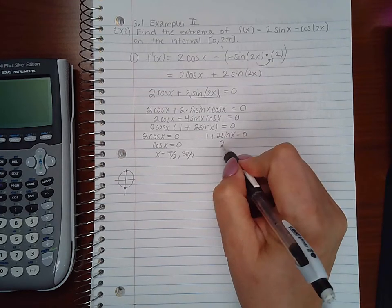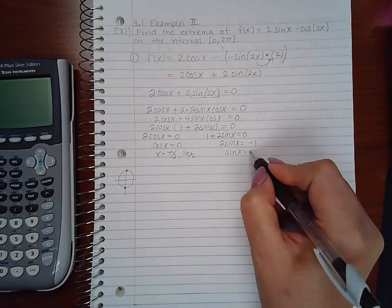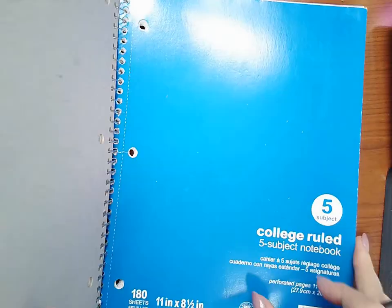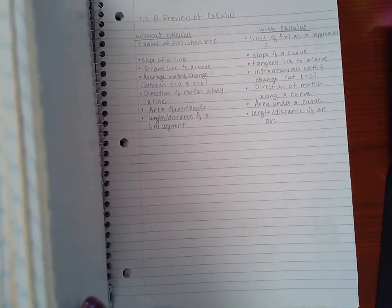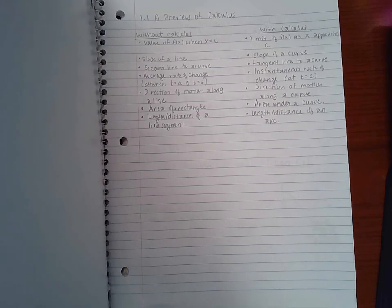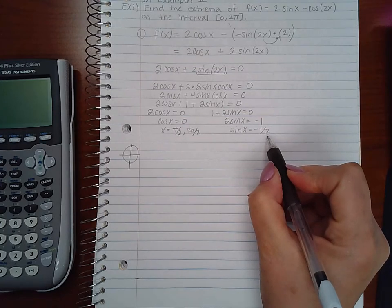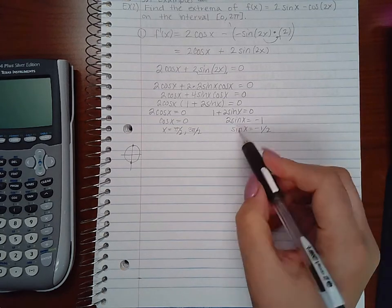Now on the other equation, I am going to minus 1 on both sides. And then I am going to divide by 2 on both sides.